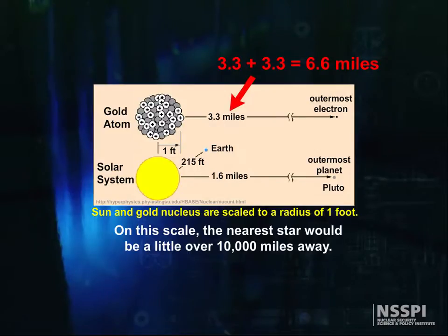On the other hand, the next gold nucleus is on the order of 6 miles away, depending on the bonding, which is very different from how stars are laid out.